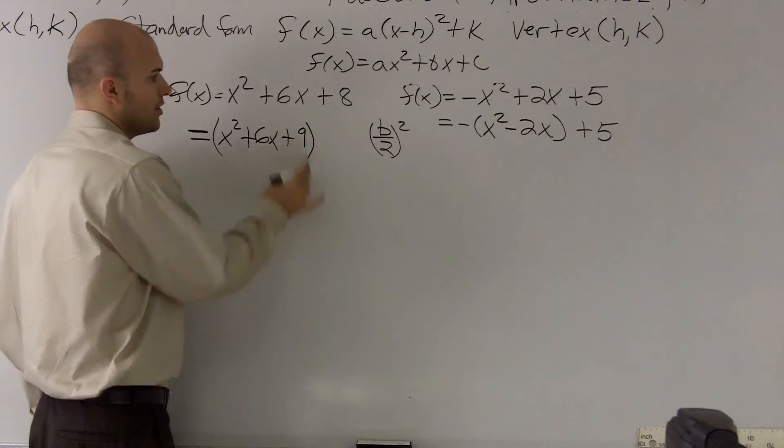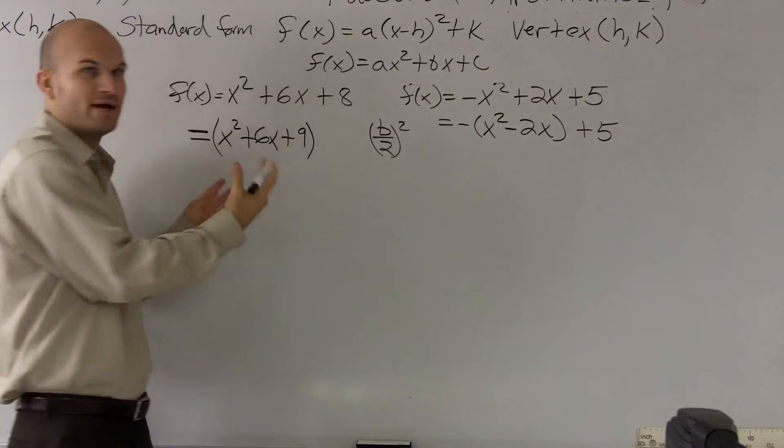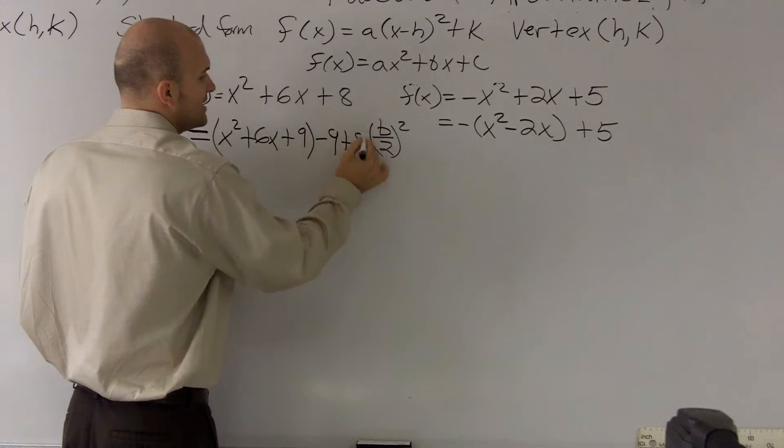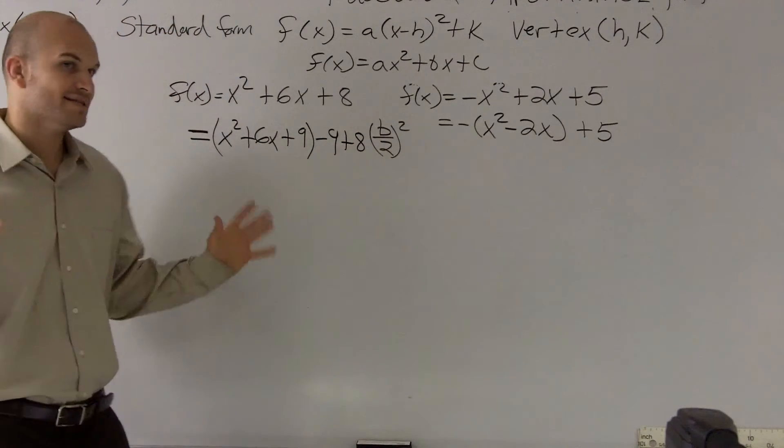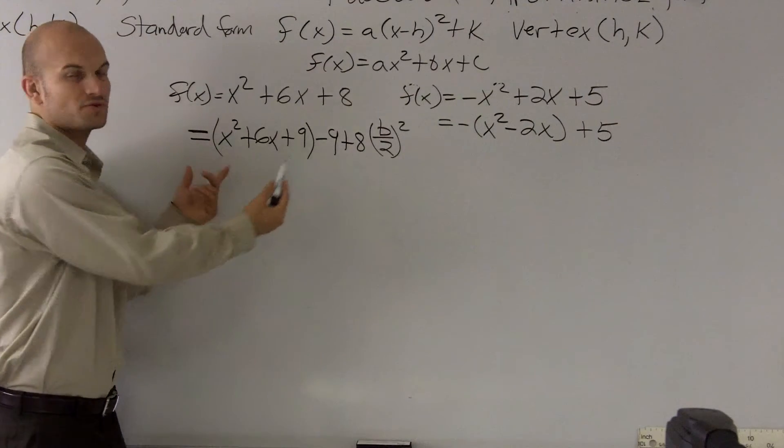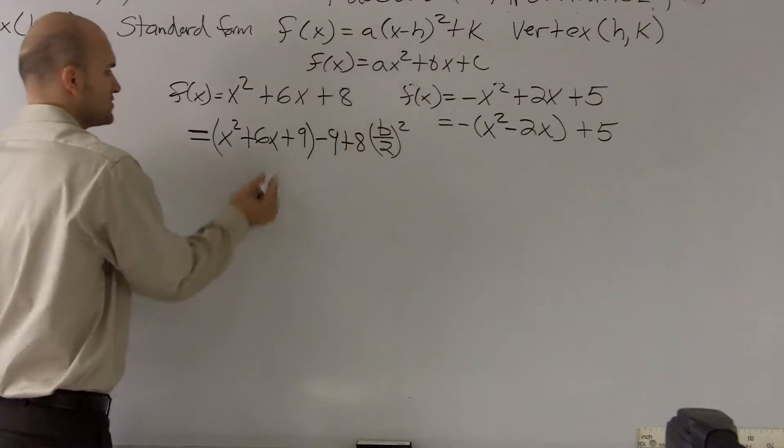Now, to keep my function going though, if I add 9 to keep my equation still equal, I have to subtract 9, and then plus 8 is still there. So the only thing I did was I added a 9 and I subtracted a 9. Now I'm going to keep these within parentheses because what this does is this now gives me a perfect square.